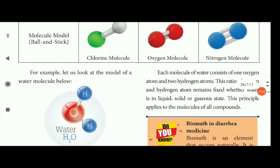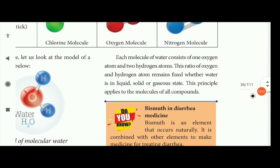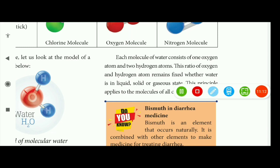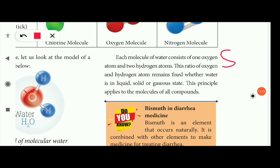Each molecule of water consists of one oxygen atom and two hydrogen atoms. The ratio of oxygen to hydrogen atoms remains fixed whether water is in liquid, solid, or gaseous state. Water exists in three forms: liquid water, solid ice, and gaseous steam.